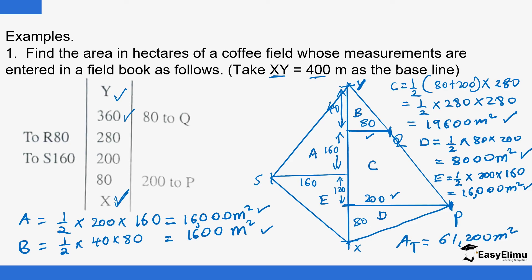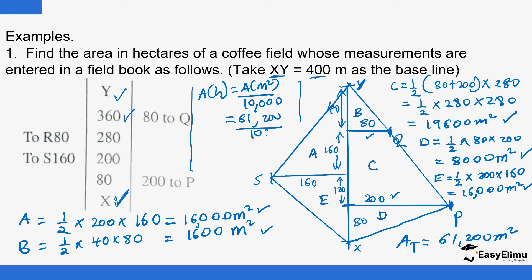You can also find the area in hectares. Area in hectares equals area in square meters divided by 10,000. So that is 61,200 divided by 10,000, which gives 6.12 hectares. Take note: dividing square meters by 10,000 gives you the area in hectares.